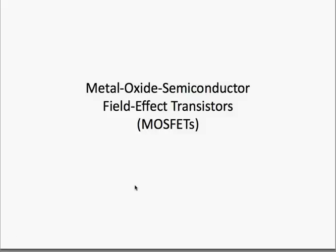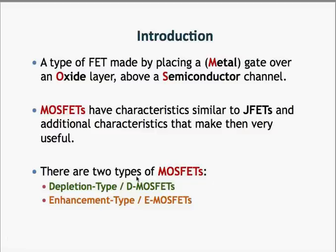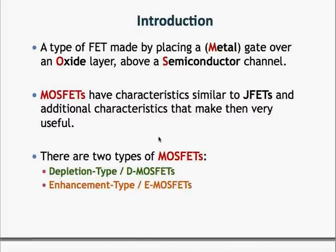That's all on JFETs. Let's now move on to the second type of FET — the MOSFETs, or Metal Oxide Semiconductor Field Effect Transistors. A typical MOSFET is made by placing a metal gate over a very thin oxide layer, all located above a semiconductor channel. That is where the acronym MOS comes from: Metal over an Oxide layer above a Semiconductor channel. MOSFETs are similar to JFETs but have additional characteristics. There are two types: the depletion type MOSFET and the enhancement type MOSFET.